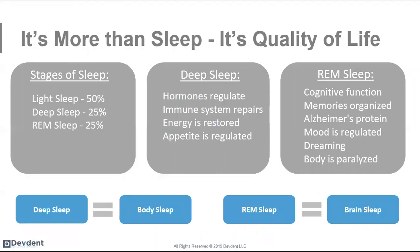Sleep is more than just waking up feeling rested — it's quality of life. We break sleep into three stages: light sleep, deep sleep, and REM sleep, during which significant processes happen in the body. Deep sleep is when hormones are regulated, the immune system repairs, we get our energy back, and appetite is regulated. Hormones released at night tell our body when to burn versus store fat — if those hormones aren't regulated during deep sleep, our body can be told to store fat instead of burn it. We call deep sleep 'body sleep.'